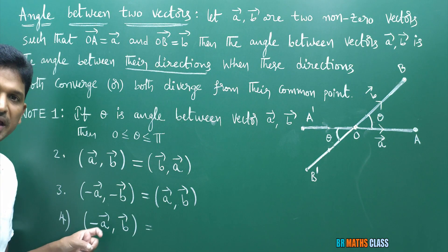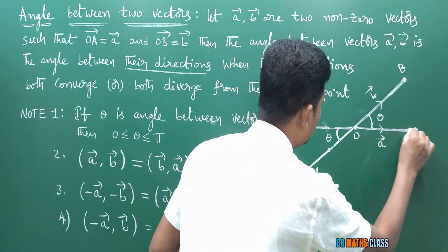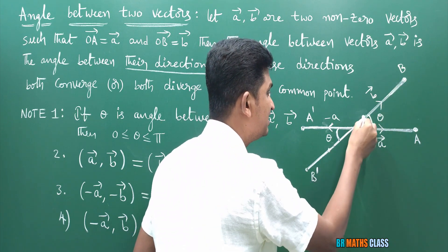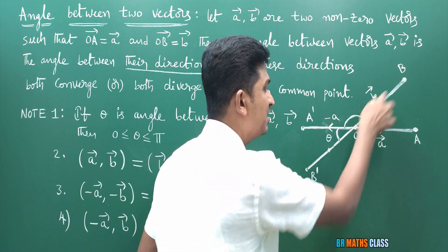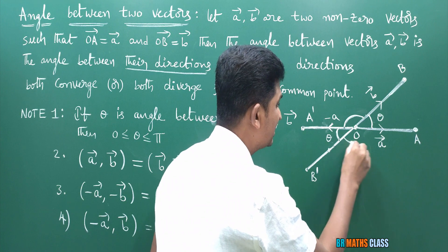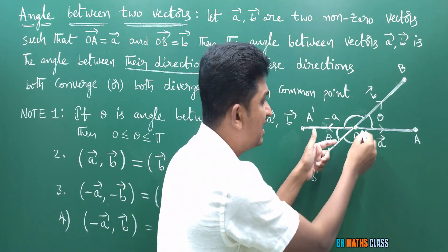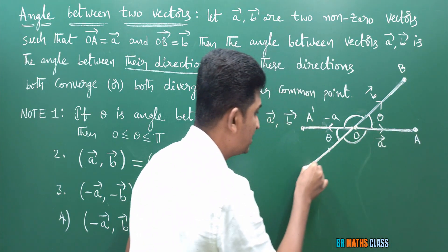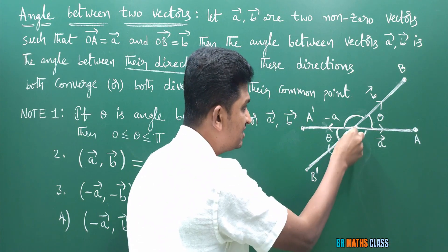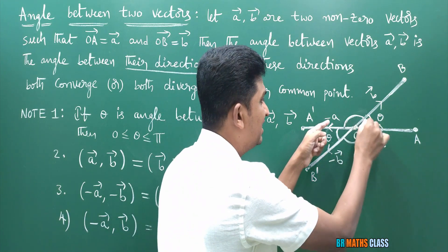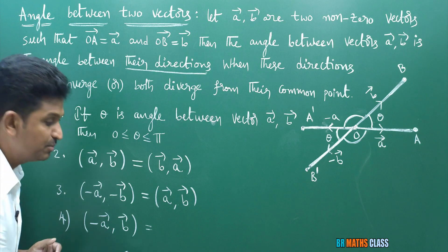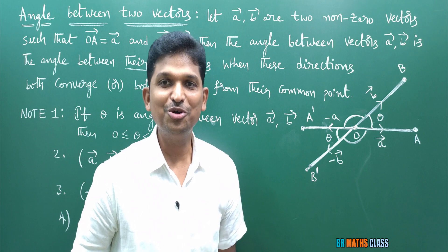Fourth note point: the angle between minus a-bar and b-bar is the same as the angle between a-bar and minus b-bar. Minus a-bar is the same magnitude but opposite direction of a-bar. Both directions diverge from the common point. And by vertically opposite angles, the angle between minus a-bar and b-bar equals the angle between a-bar and minus b-bar.